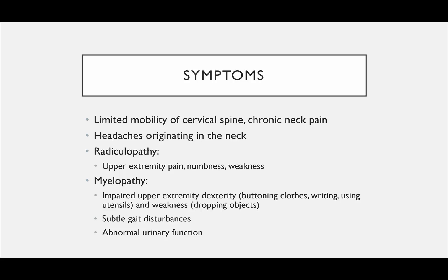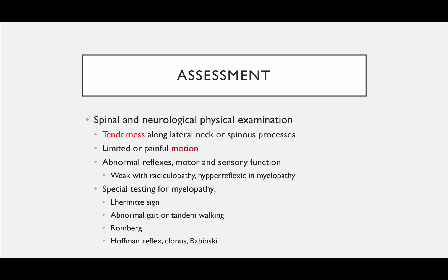Symptoms of cervical spondylosis include limited mobility of the cervical spine and neck pain. Patients may also have headaches. Radiculopathy — nerve root irritation — causes upper extremity pain, numbness, and weakness, because cervical nerve roots go to the upper extremities. Myelopathy — spinal cord compression in the cervical spine — can cause impaired upper extremity dexterity, gait disturbances, and abnormal urinary dysfunction, which you must ask about in your history and look for on exam.